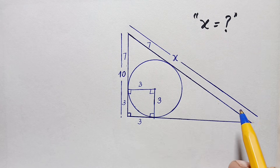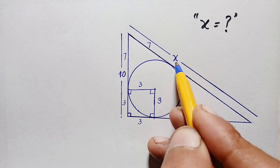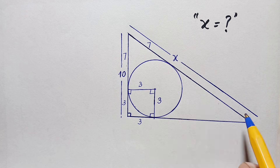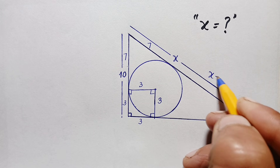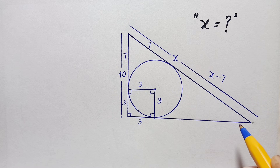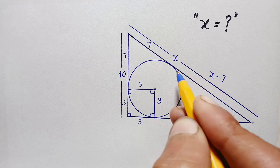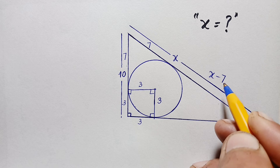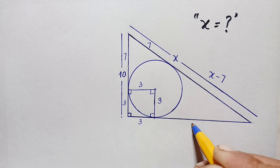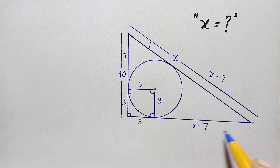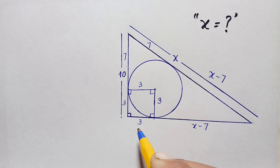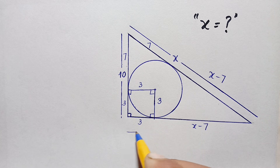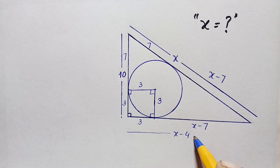For the hypotenuse side, the total length is x. Since one segment is 7 units, the remaining length is x minus 7. Applying the two-tangent theorem again, the other tangent from that external point is also x minus 7. The base of the triangle is then the sum of that tangent plus 3: (x minus 7) plus 3, which simplifies to x minus 4.